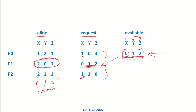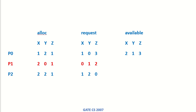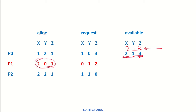Initially the available resources were 0, 1, and 2. Since P1 has finished its execution, it will release its resources, which get added to the available pool. So 2 plus 0 is 2, 0 plus 1 is 1, and 2 plus 1 is 3. The resources released have been added to the available resources, and now the available resources are 2, 1, and 3.